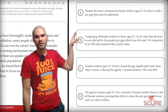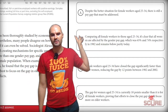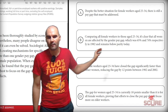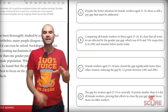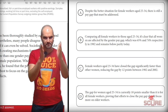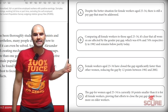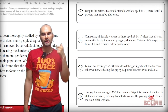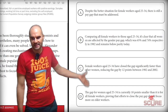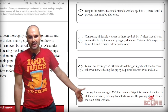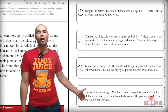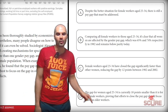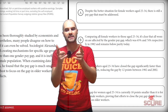Looking at the answer choices: A says despite the better situation for female workers age 25–34, there's still a pay gap that must be addressed — but he's not asking us to focus on younger workers. B compares all female workers to those age 25–34, and 'all women' is going to be wrong. C says female workers age 25–34 have closed the gap significantly faster, reducing it by 12 points — that's true, but it's not the point he's trying to make. D says the gap for women age 25–34 is currently 10 points smaller than it is for all female workers, proving efforts should focus more on older workers. That's exactly what he was trying to say — D is the right answer.